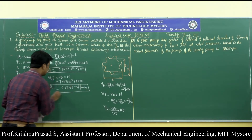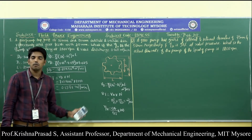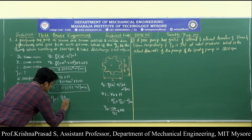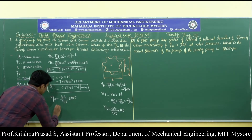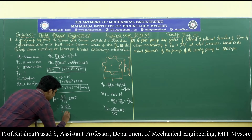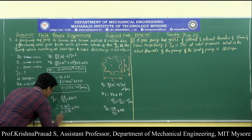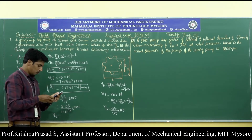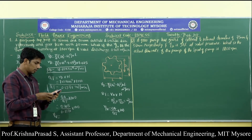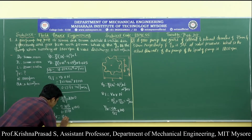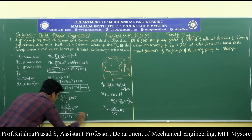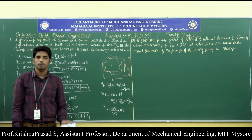The volumetric efficiency of the external gear pump is: η_v = (QA / QT) × 100 = (0.105 / 0.1378) × 100 = 76.19%, approximately equal to 77%. This is the volumetric efficiency of the external gear pump.